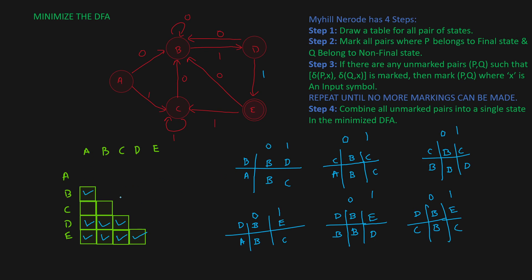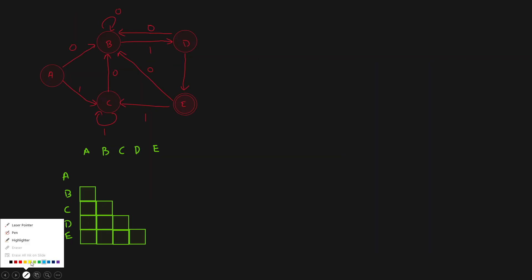Now you have to iterate again. For pair BA on input one you go to pair DC — which is now marked — so BA must be marked. For pair CA, on input one you go to CC and on input zero to BB, neither of which exist. For pair CB, on input one you go to pair CD — which is now marked — so CB must be marked. Checking AC again: on input zero and one you go to BB and CC, which don't exist. So the only remaining unmarked pair is AC.